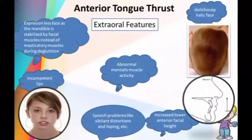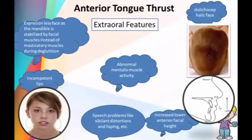In anterior tongue thrust, the extraoral features include abnormal mentalis muscle activity, dolichocephalic facial pattern, increased anterior facial height, and speech problems like sibilant distortion. Intraoral features include proclined upper anterior teeth, retroclined or proclined lower anterior teeth, presence of anterior open bite or posterior crossbite.